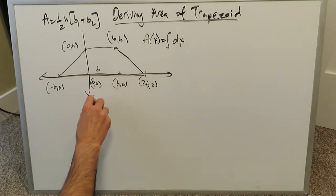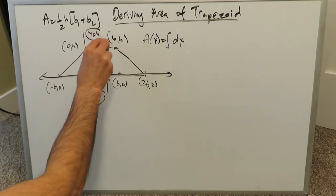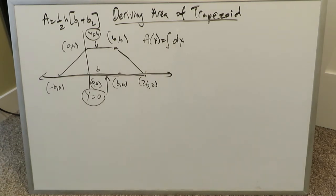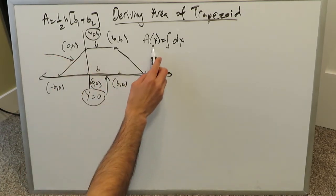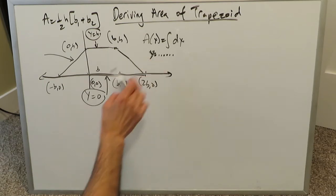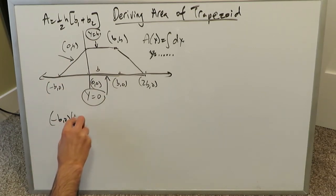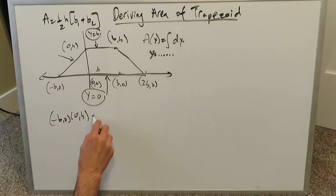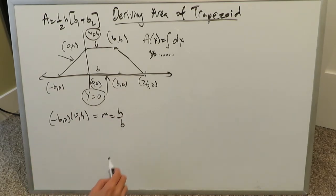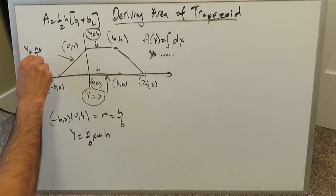The bottom line is simply y = 0, and the top line is y = h. For the left diagonal line, we have two points: (-b, 0) and (0, h). The slope is h/b — it's an upward sloping line — and since the y-intercept is h, the equation becomes y = (h/b)x + h.